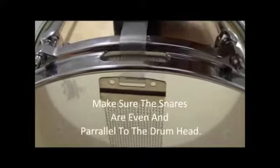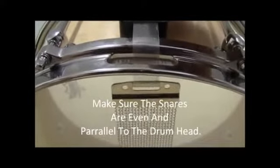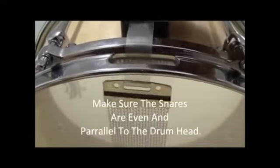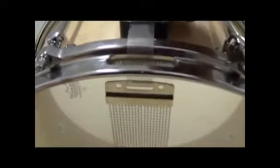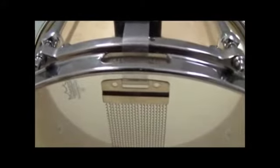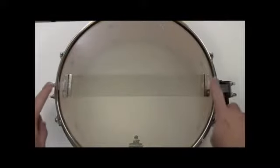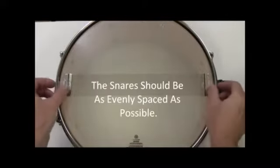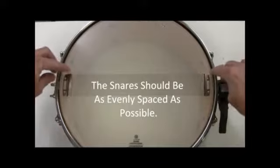Make sure your snare wires are even and parallel to the bottom snare side drum head. You'll want to pay close attention to the placement of your snare wires because this helps to reduce unwanted snare buzz. Make sure the snare wire is evenly spaced on the snare head.